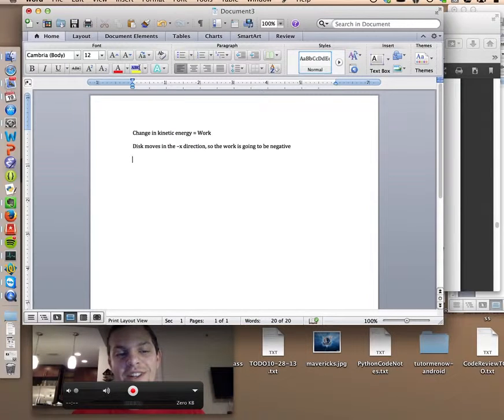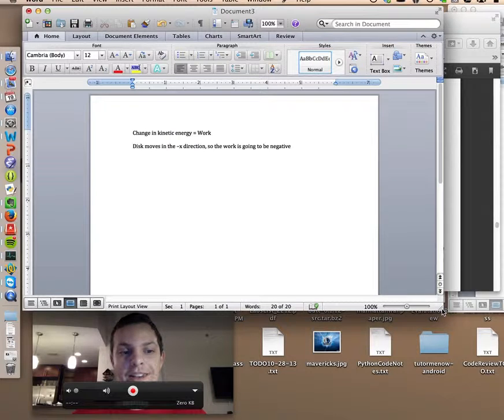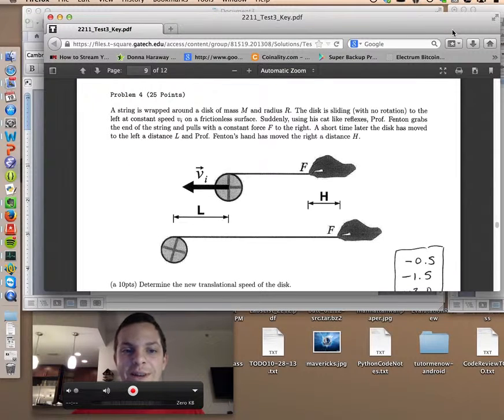Changing kinetic energy is the same as saying the final kinetic energy minus the initial kinetic energy. So kf minus ki equals negative fl in this case, which is the work done on the system. So if we go back to the diagram,